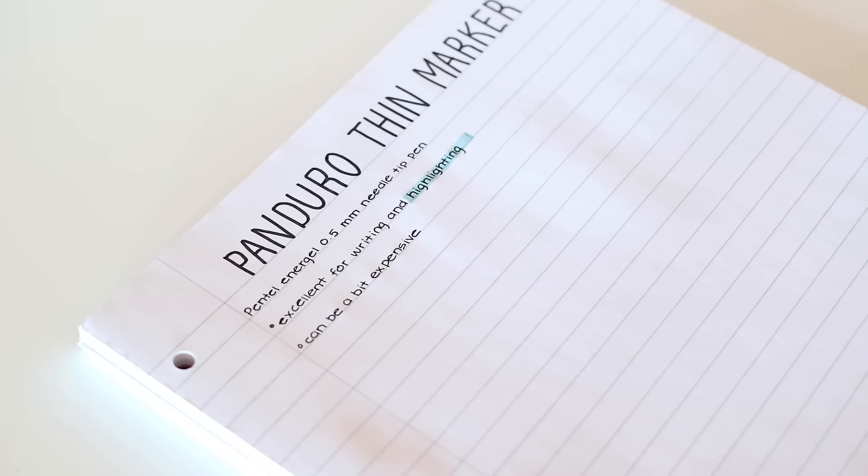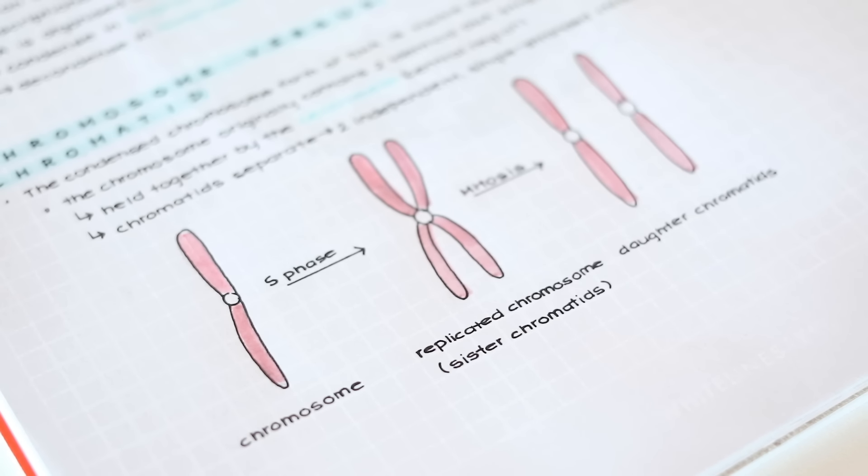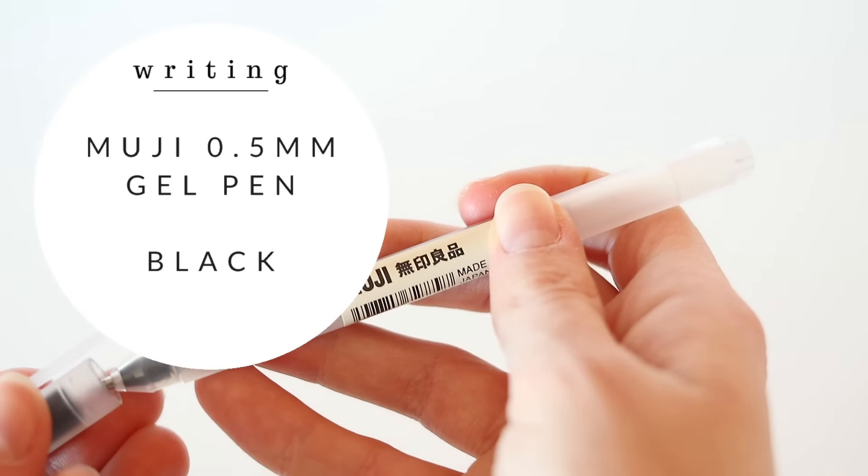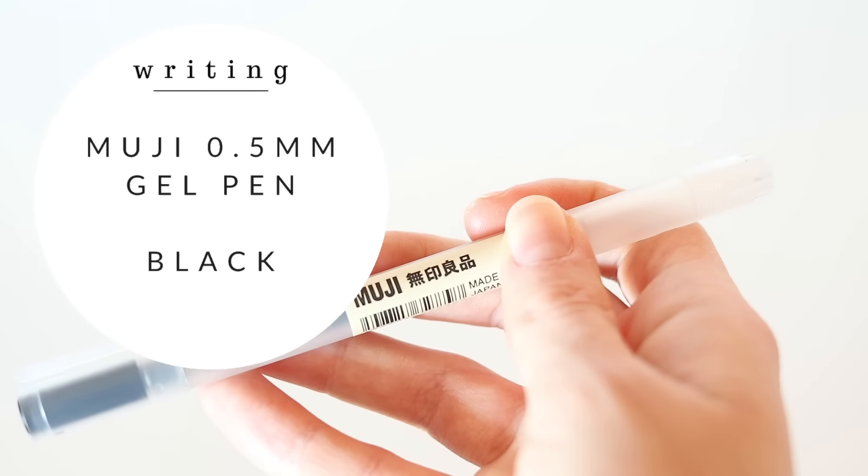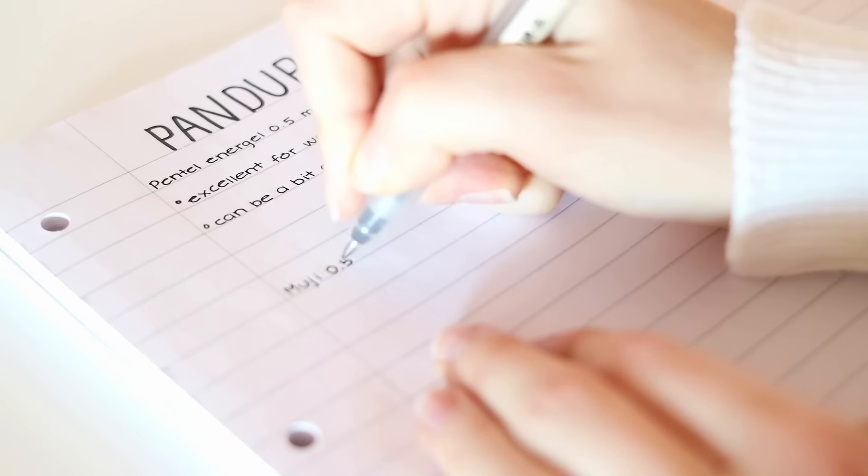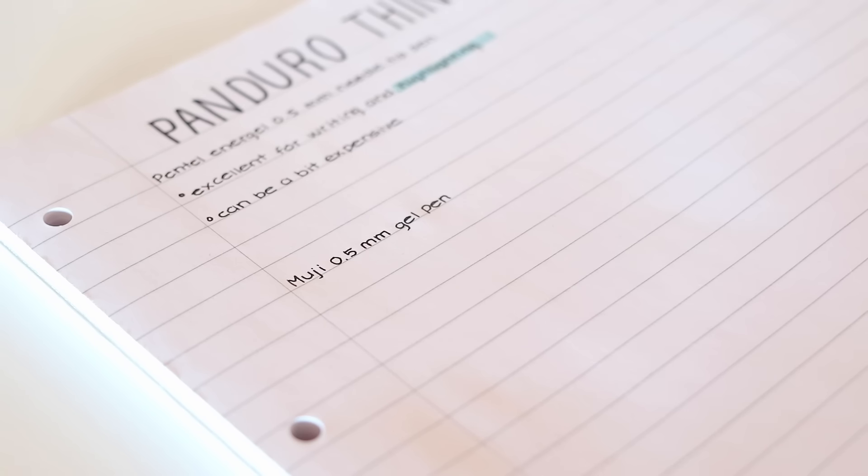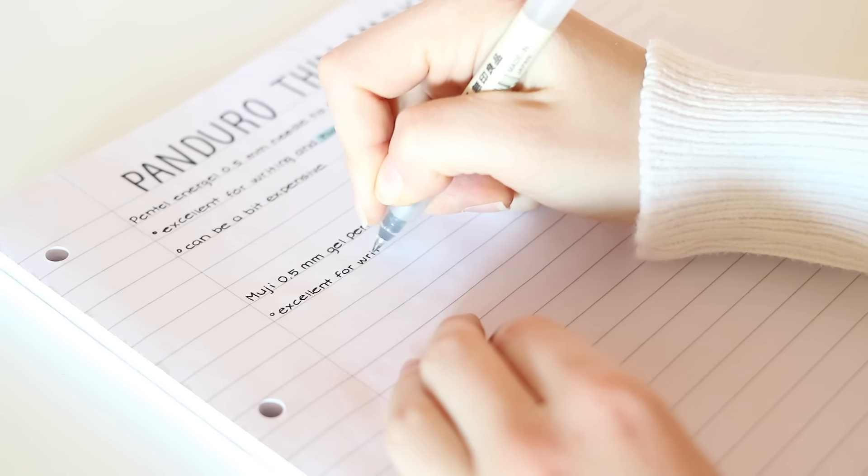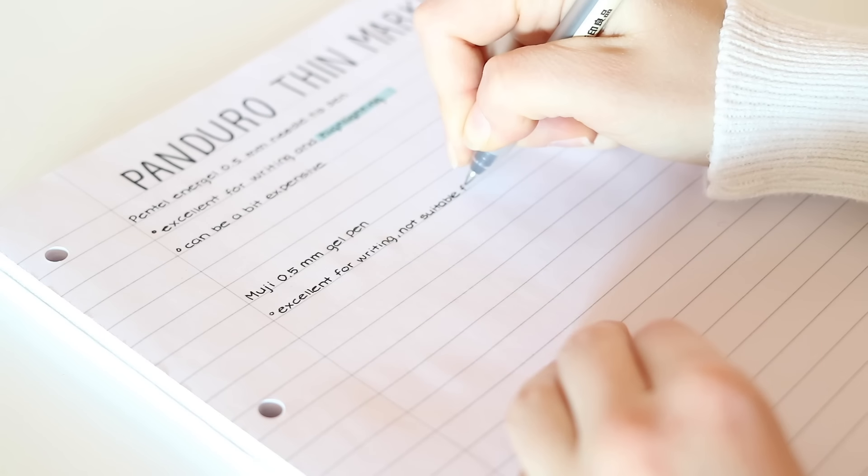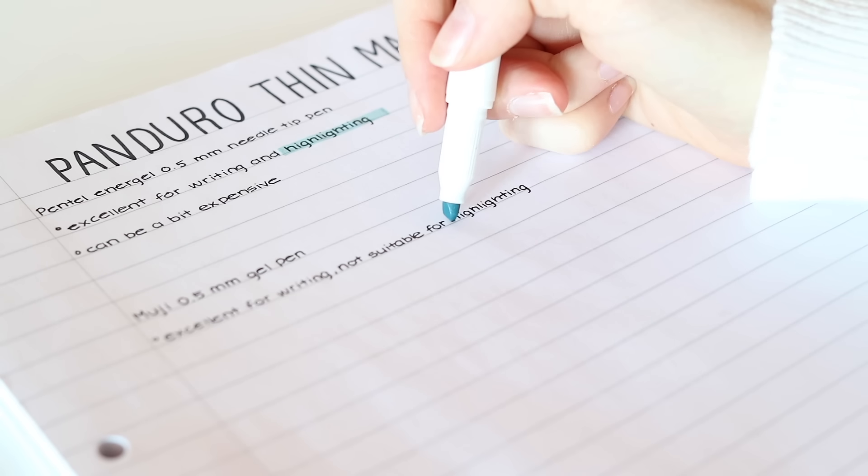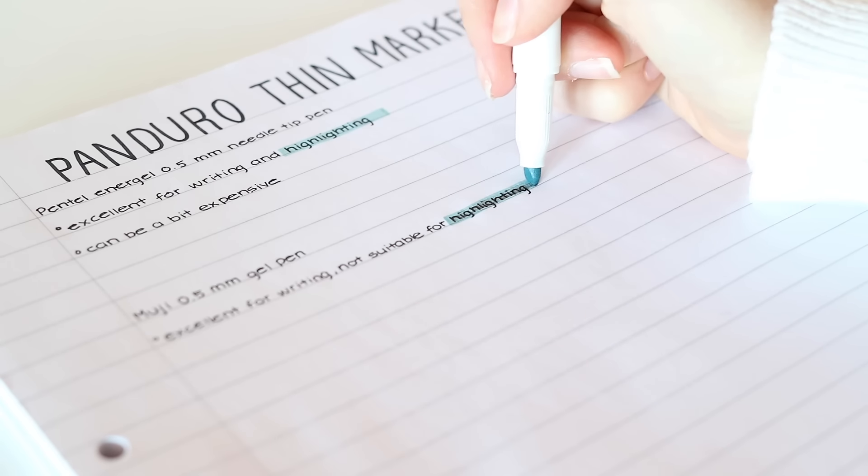The only downside is that it can be a bit expensive so I usually buy it when it's on sale. I use it for writing my notes as well as for drawing diagrams since it doesn't smudge when I color. A cheaper option to the Pentel EnerGel are the Muji gel pens. They come in 0.38 and 0.5 millimeters and I use the 0.5 millimeter ones. It writes almost as smoothly as the Pentel EnerGel but it does smudge a lot so I would not recommend using it if you highlight.